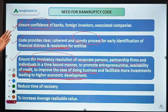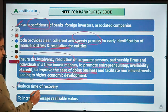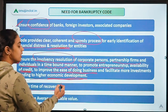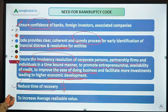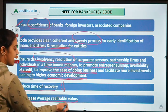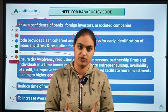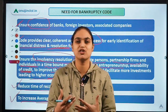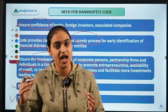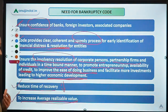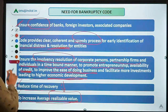Moreover, the objective of this code was to reduce the time of recovery. Earlier it took a long time to recover amounts, and that time has been reduced with the help of this code. It also focused on increasing the realizable value — instead of simply shutting down the business and selling assets, the code focused on keeping businesses running and recovering amounts, maximizing whatever assets could be realized.